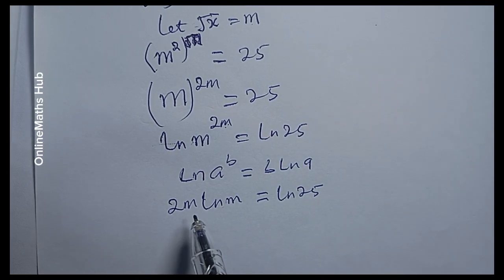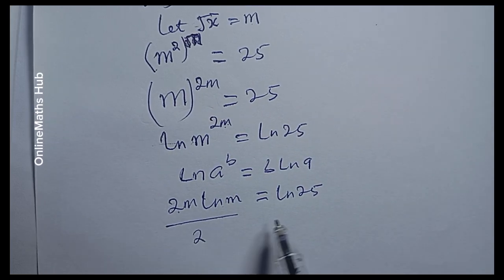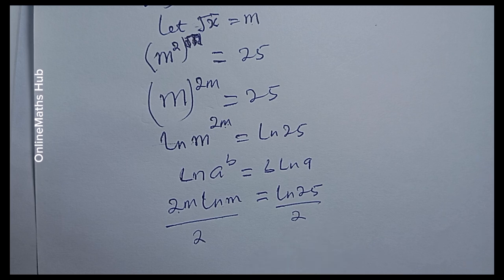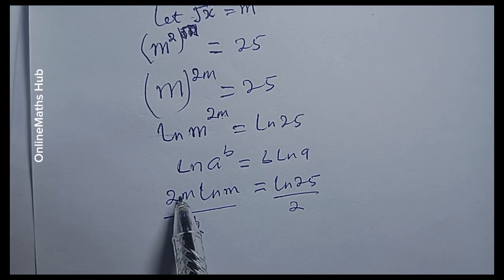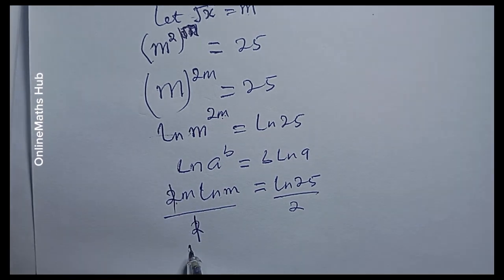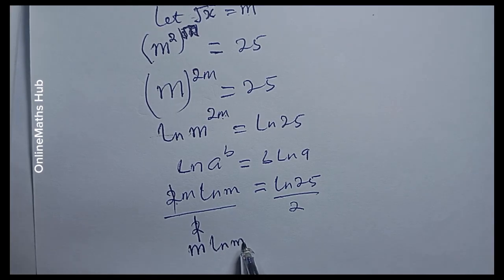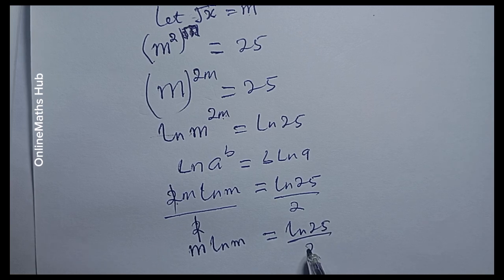At this point, I'm going to divide through by 2, so that I have m multiplied by the natural log of m, equal to the natural log of 25 divided by 2.